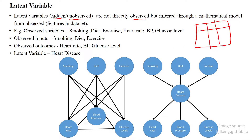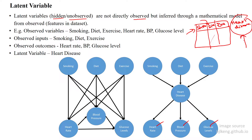The dataset has variables like smoke, diet, and exercise — these are all called observed variables. We cannot directly have a value for heart disease, but from these values we can identify the possibility of heart disease. For that, we can add three more variables: heart rate, blood pressure, and glucose level. So our table has six features, and from these six features we can identify heart disease. Heart disease is called the latent variable — it is calculated from the observed variables.